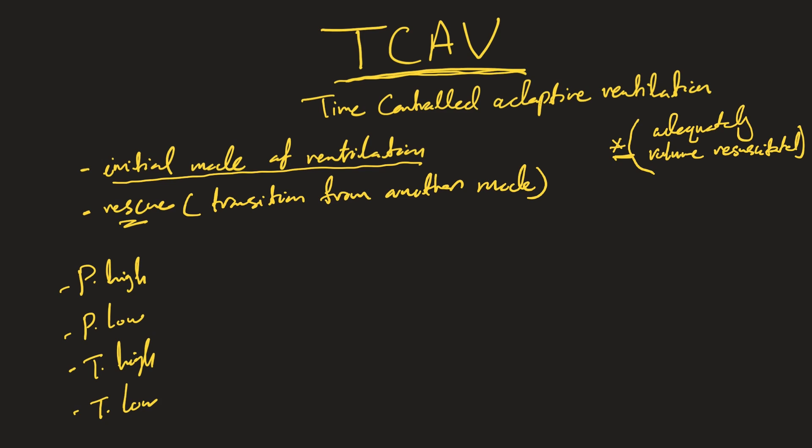When deciding initial settings, assess the chest X-ray or the lungs of the patient. Is the lung normal — for example, a drug overdose patient? Do they have mild pulmonary edema? Or do they have severe pulmonary edema or severe pneumonia? Based on that assessment — normal, mild, moderate, or severe — you will decide how to set these values.